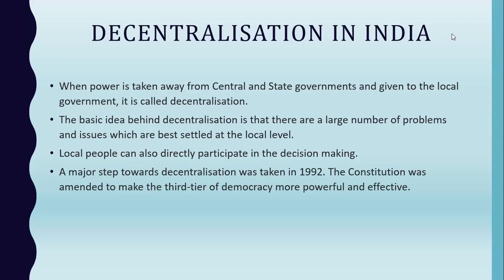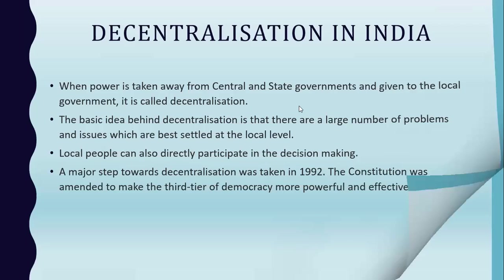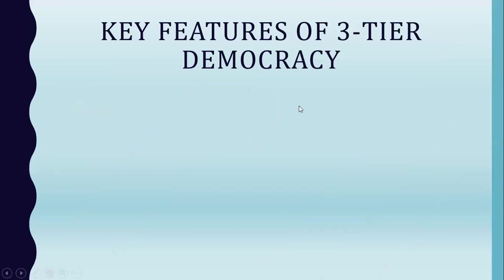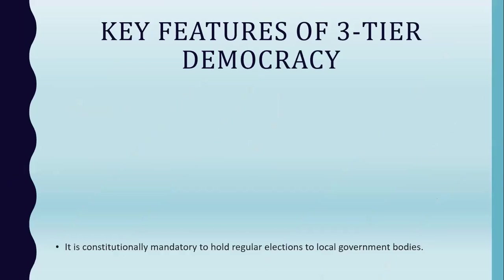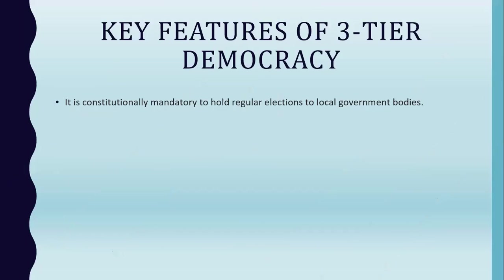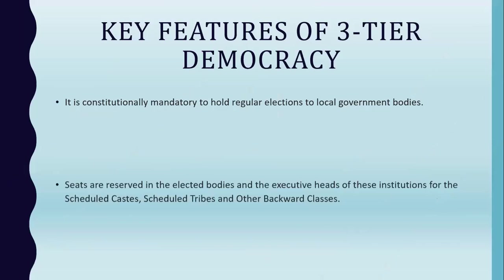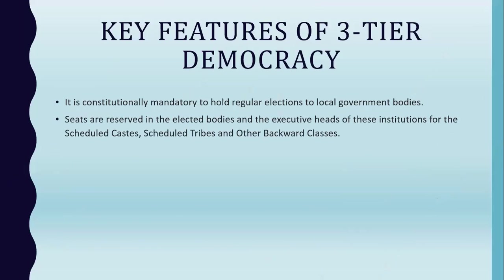A major step was taken towards decentralization in 1992 when the constitution was amended to make the third tier of democracy more powerful and effective. Key features include: first, it is constitutionally mandatory to hold regular elections to local government bodies. Second, seats are reserved in elected bodies and for the executive heads of these institutions for Scheduled Castes, Scheduled Tribes, and Other Backward Classes.